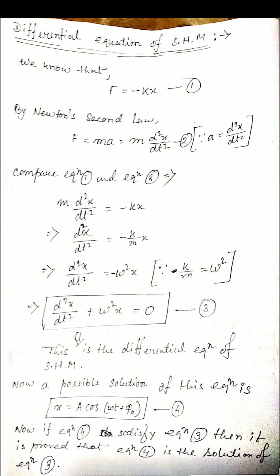To summarize the derivation: we used the simplest form F equals minus kx, then applied Newton's second law replacing acceleration with d²x by dt². Comparing the equations, k by m is a constant denoted by ω², giving d²x by dt² equals minus ω²x. Rearranging, d²x by dt² plus ω²x equals 0 — the differential equation of SHM.